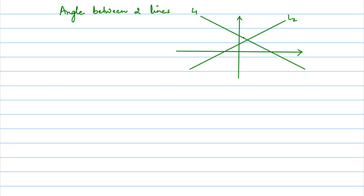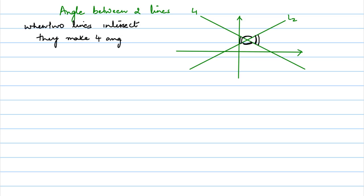They actually make four angles: one, two, three and four. But if you look closely, how many different angles do they make? They make two different angles. Because this angle and this angle are equal — vertically opposite. And this angle is the same as this angle. Therefore, when two lines intersect, they make four angles but two different angles.